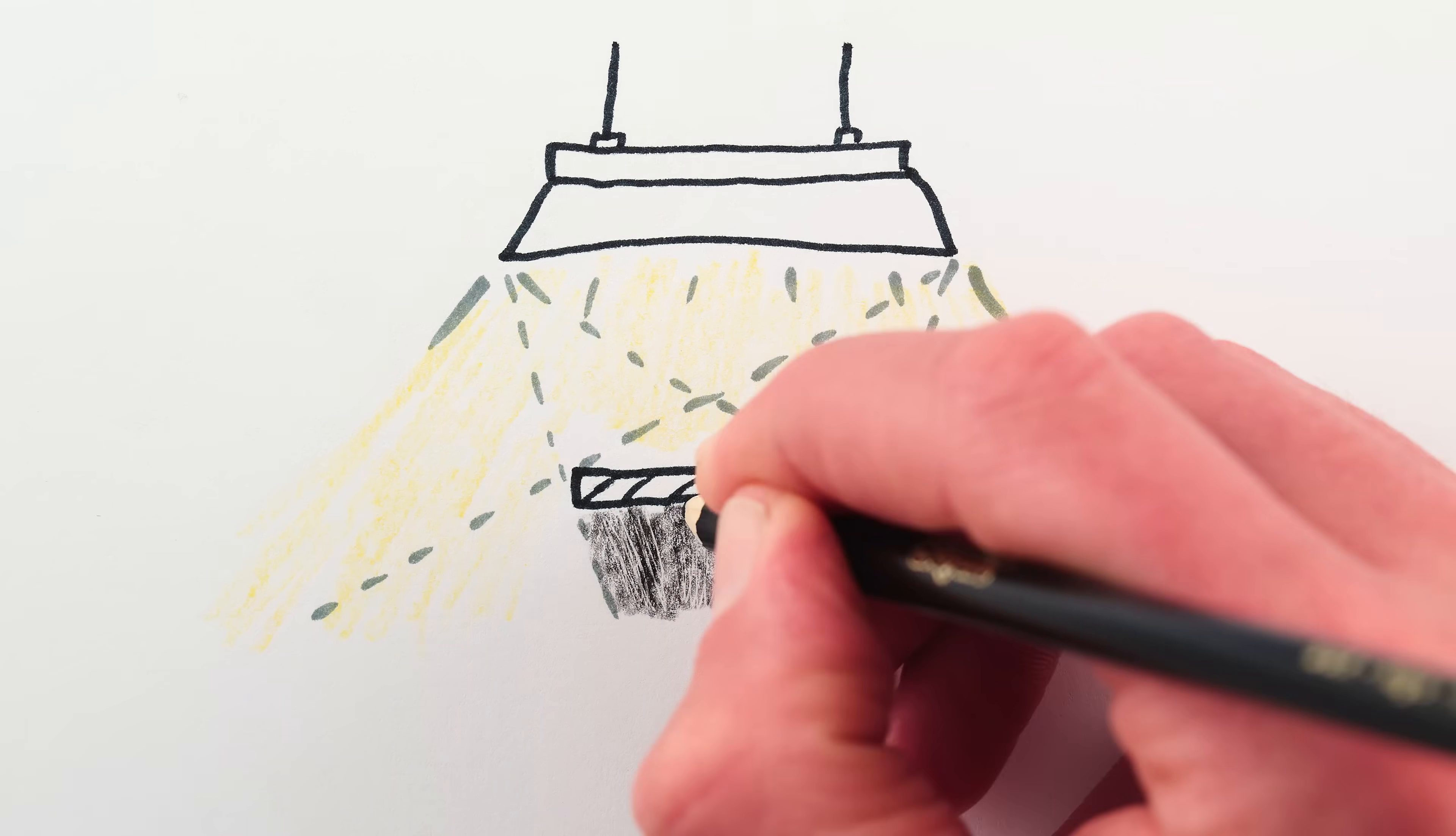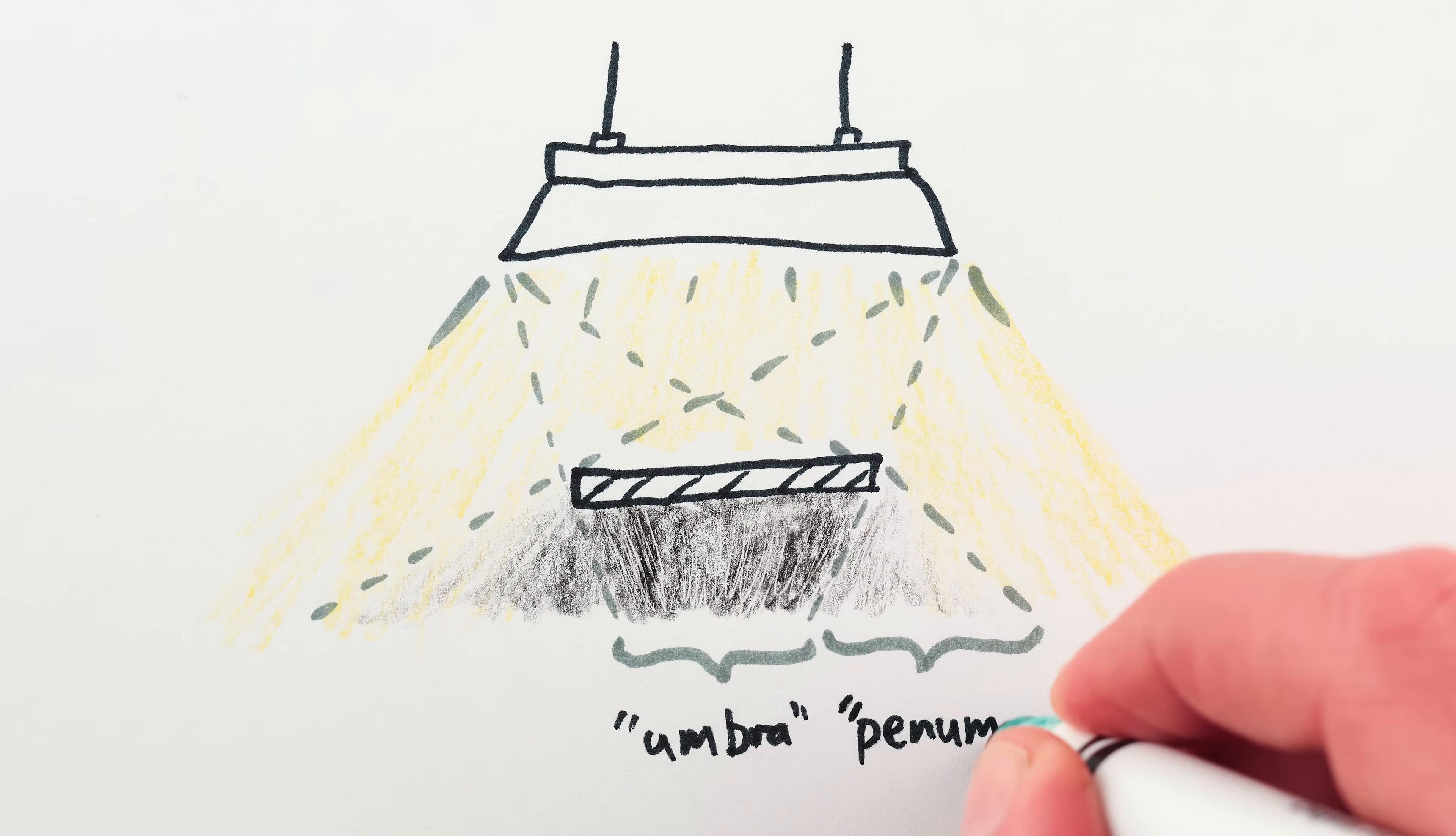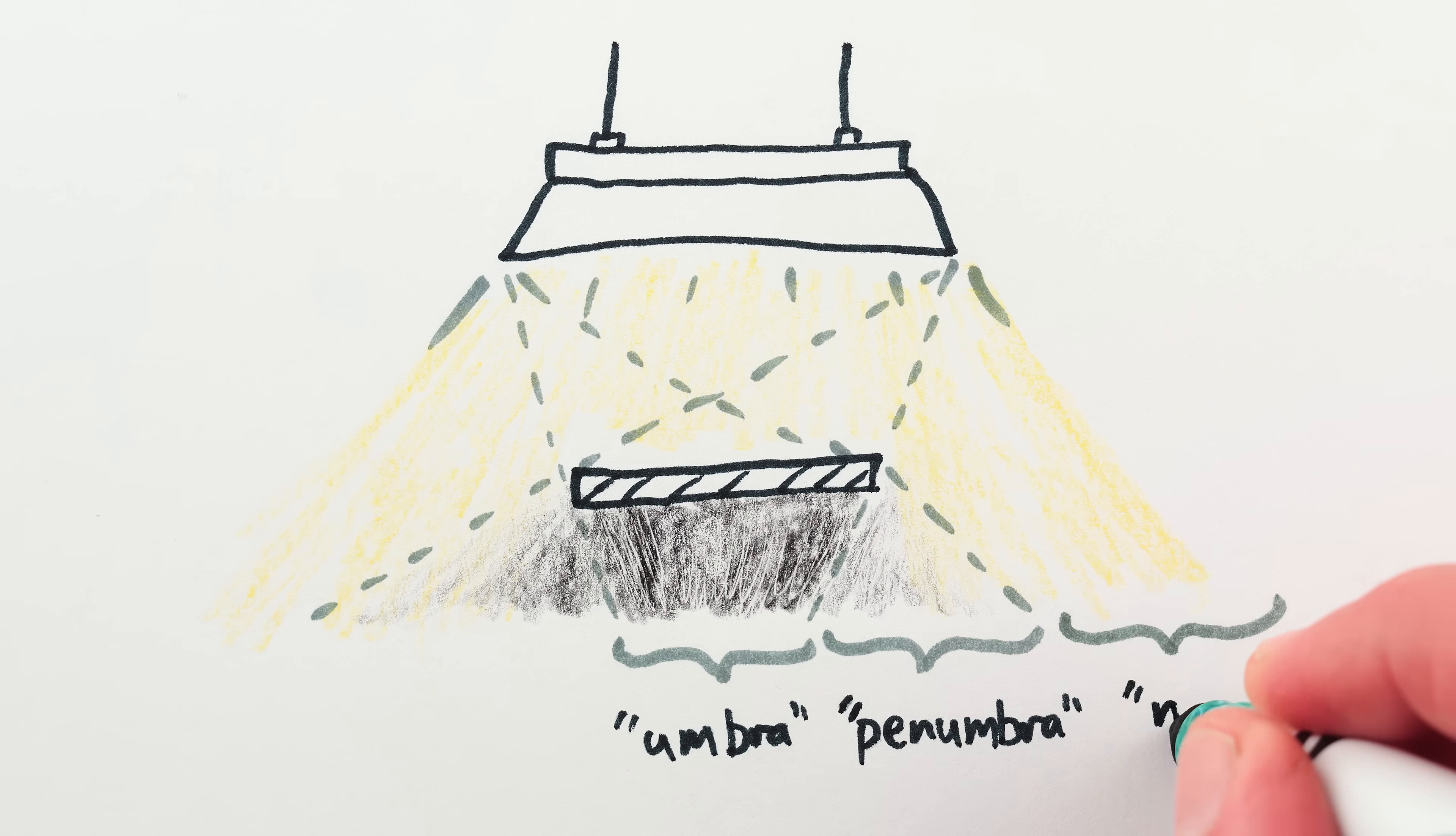The core dark part of a shadow is where light from everywhere on the light source is being blocked. The blurry edge of the shadow is where some parts of the light source are being blocked, while others get past. And the brightness outside the shadow is where all parts of the light source reach without being blocked.